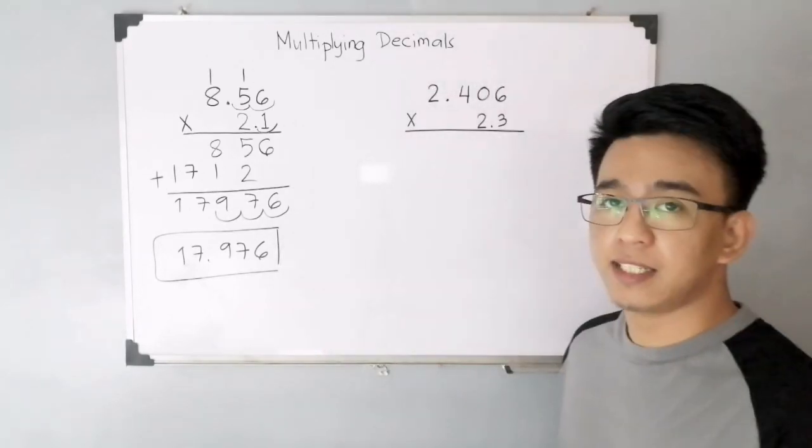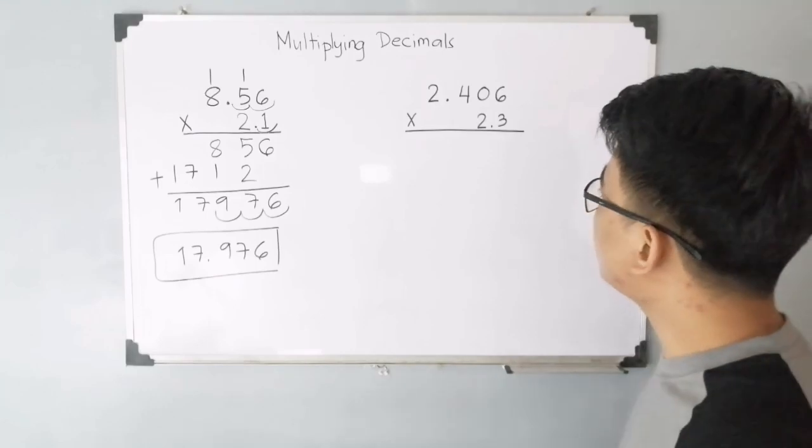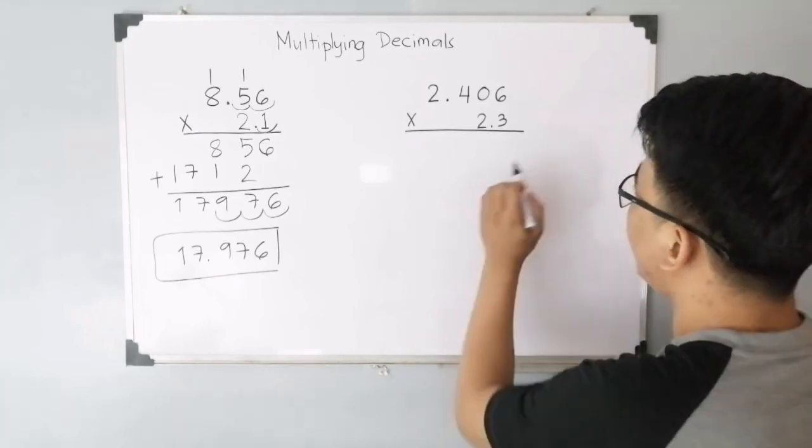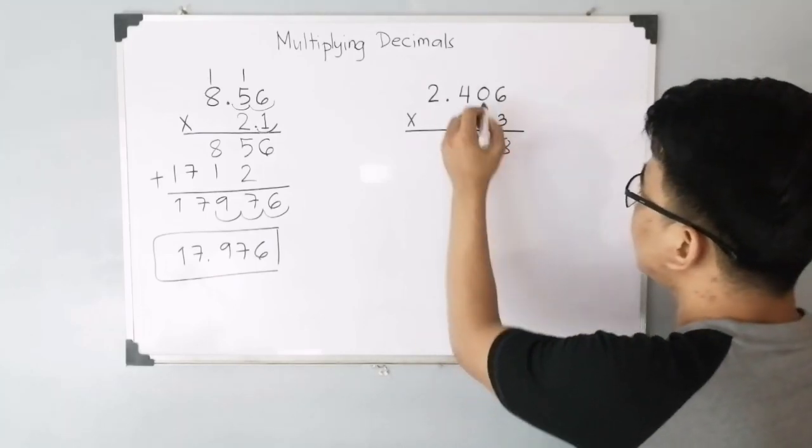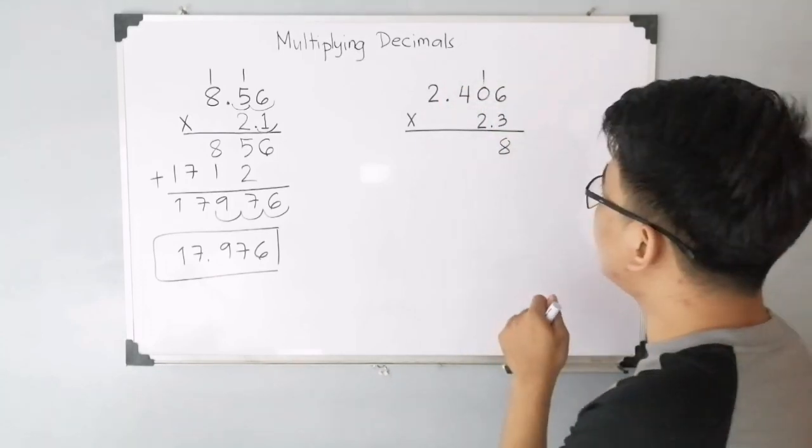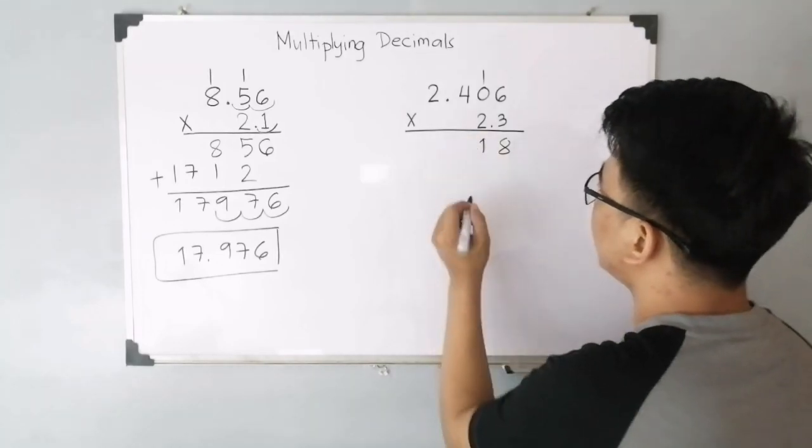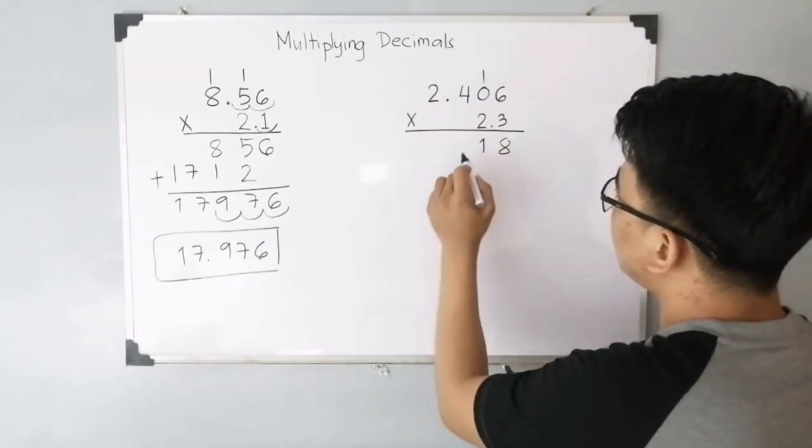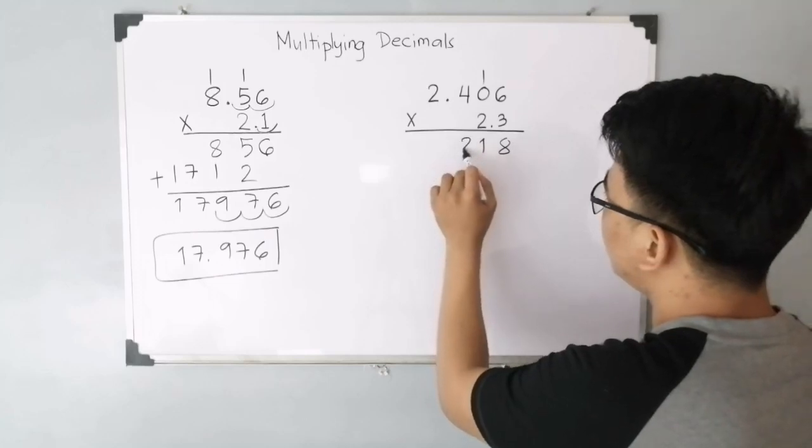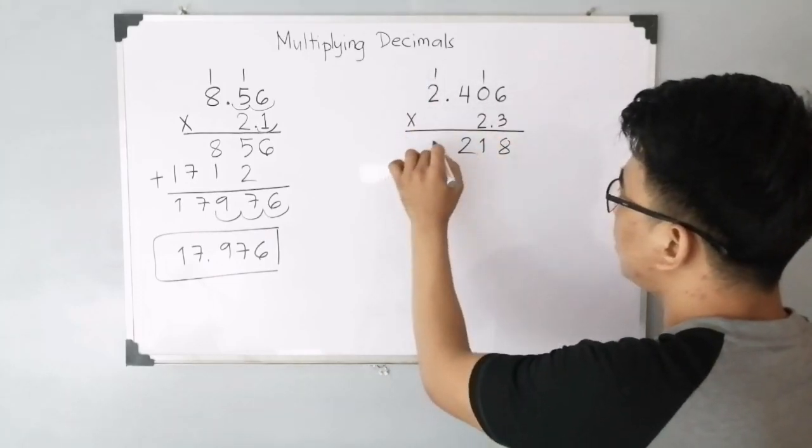So, let us have item number 4 for the last example. We have 2.406 times 2.3. So, multiplying 3 times 6. That is 18. Carry 1. 3 times 0. That will give you 0. Plus 1. That is 1. 3 times 4. That will give you 12. So, 2. Carry 1. And 3 times 2. 6. Plus 1. 7.